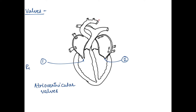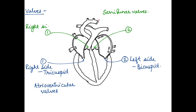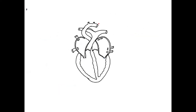The heart has four valves. The valves between the auricle and the ventricle are called atrioventricular valves. The atrioventricular valve on the right is called the tricuspid and on the left is called the bicuspid. Apart from that there are two semilunar valves: the pulmonary semilunar valve on the right side at the base of the pulmonary artery, and the aortic semilunar valve on the left side at the base of the aorta.